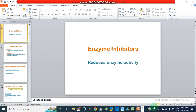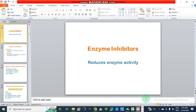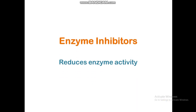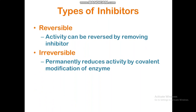If we look at enzyme inhibitors, an enzyme inhibitor reduces the enzyme activity. These are reversible and irreversible. In a reversible inhibitor, the activity can be reversed by removing the inhibitor, whereas in an irreversible inhibitor, the activity of the enzyme is permanently reduced by covalent modification of the enzyme.